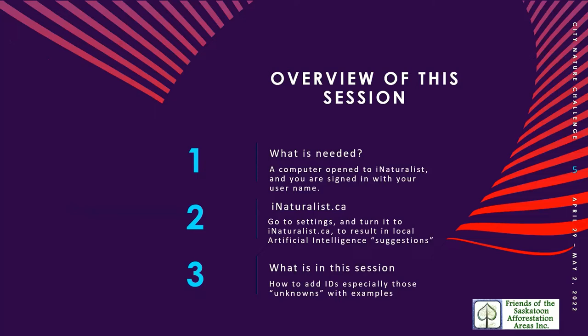During this session on iNaturalist identifications, what would you need to make an identification? You would need your computer opened up to iNaturalist and you are signed in with your username. To make identifications for Saskatoon area, you would go to settings and turn it to iNaturalist.ca, and that will help the artificial intelligence resident on iNaturalist come up with a better match for species when you're looking at the various organisms. If you were going to do identifications in Paris, France, you would change it to iNaturalist for France, and if in Florida or California, you would use the iNaturalist USA setting.